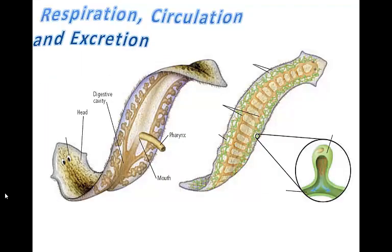Like sponges and cnidaria, flatworms do not have circulatory organs or respiratory organs. Because flatworms are so thin, their cells can use diffusion to move dissolved oxygen and nutrients to all parts of their body. CO2 and other wastes are also removed from cells by diffusion.